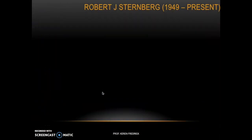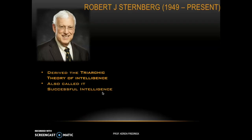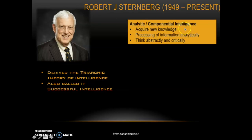Next we look at Robert J. Sternberg, born in 1949, currently in America. He came up with the triarchic theory of intelligence, also called successful intelligence. It has three components. The first is analytical or componential intelligence — the ability to critically analyze things, think abstractly, and process information analytically. These individuals are essentially book smarts and could be lecturers, professors, mathematicians, or statisticians.